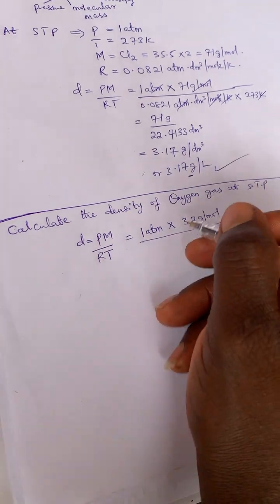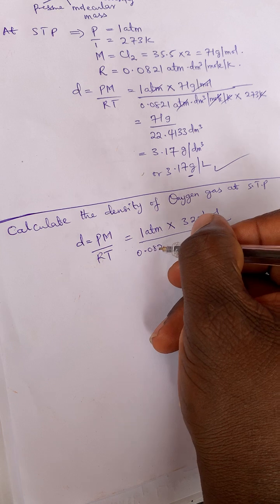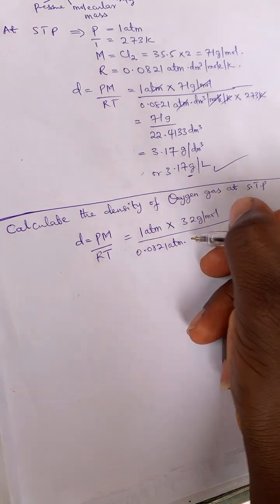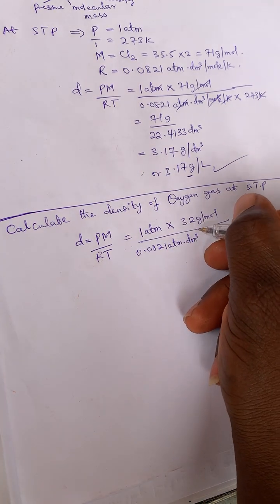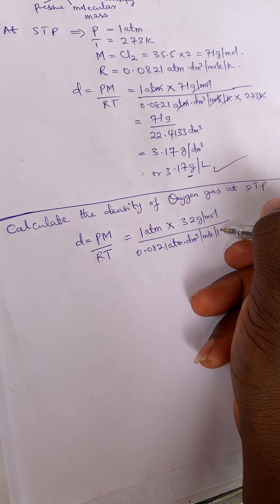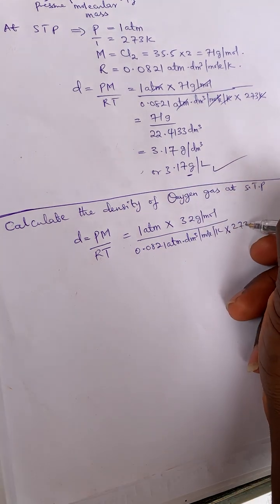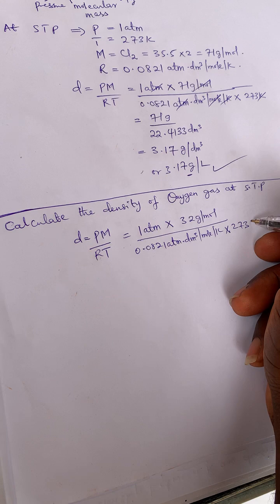Then divided by 0.0821 atm dm cube per mole per K, then this is multiplied by 273 Kelvin.